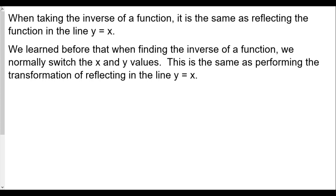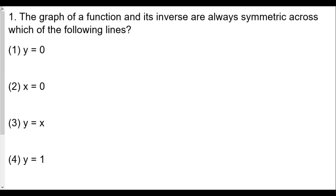When finding the inverse function, we switch x and y values. The point (x, y) becomes (y, x), and we learned in geometry that this is a line reflection over the line y equals x. So for number one, the answer is choice three: reflection over the line y equals x. The image of the inverse of the function is symmetric across the line y equals x.